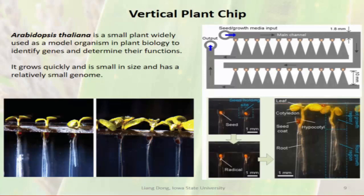One of my previous works is about growing plants on the device—on the chip. We are not growing corn or soybean; we are growing a model plant called Arabidopsis. It is very small—the seed is less than one millimeter. It has a relatively small genome, and it grows very quickly: from planting seed to flowering takes about four weeks.